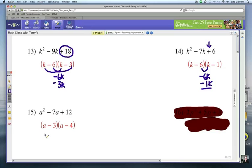And finally, number 15. It's going to be a minus 3, a minus 4. And let's double check. Again, notice that you have a positive third term. So it's a negative and a negative. And you want a negative middle term there. And so you're going to be adding together a negative 3a and a negative 4a.